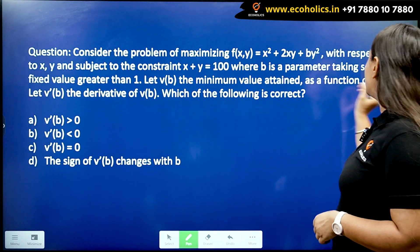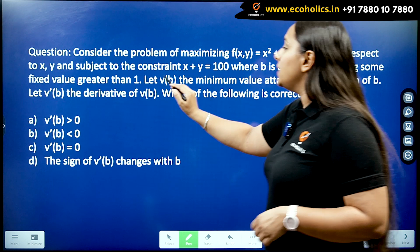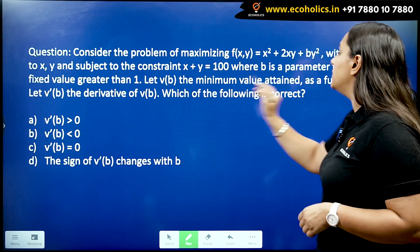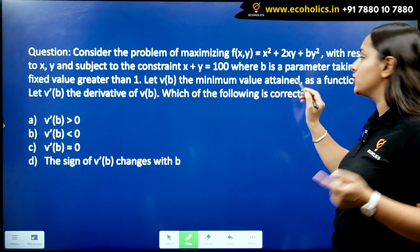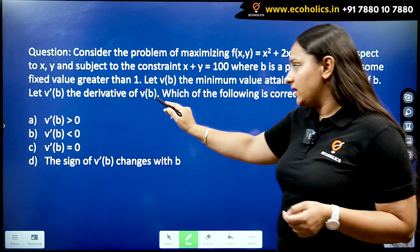So let v(b) be the minimum value attained for this function as a function of b. So v'(b) is going to be the derivative of this function.